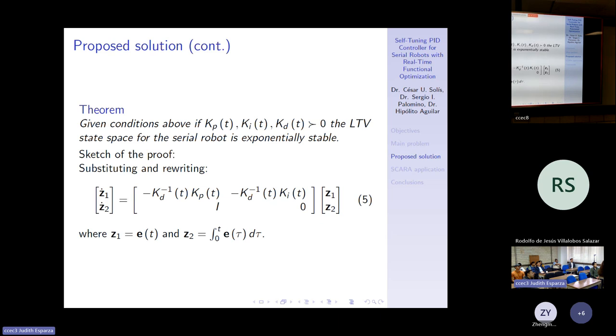Theorem: given conditions above, if the gains are positive in the sense of eigenvalues, the equilibrium of state space for the serial robot is exponentially stable. While the complete proof is in the submitted article, here we only sketch the proof. Substituting and rewriting will obtain the following state space in equation 5, where Z1 and Z2 are the error and the integral of the error.